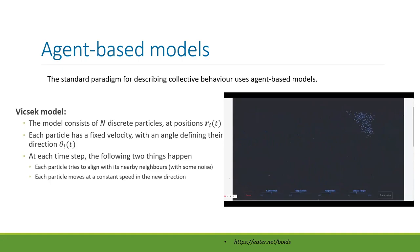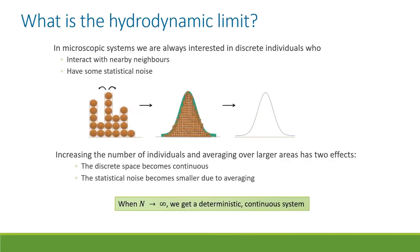There's usually some noise involved in agent-based models, so they don't deterministically go to a point. The question then is: what's the hydrodynamic limit — what happens when we let the number of agents go to infinity? All the microscopic systems have discrete individuals interacting with nearby neighbors with some noise. If we increase the number of individuals and average over larger and larger areas, the discrete space becomes continuous, statistical noise goes to zero, and in the infinite particle limit you get a deterministic continuous system described by differential equations.